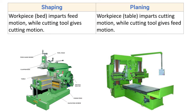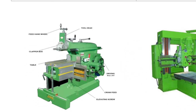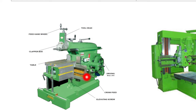Next point: in shaping, the workpiece imparts feed motion while the cutting tool gives cutting motion. The workpiece is fixed over the table of the shaper machine and the cutting tool is fixed at the tool post. After the first cut, the feed is given with the help of the table. The cutting tool then reciprocates again to remove material, and after each cut the feed is given again — the table moves horizontally along that axis.